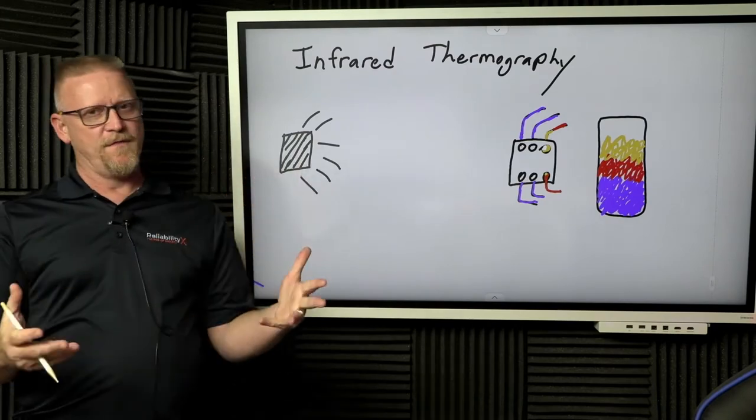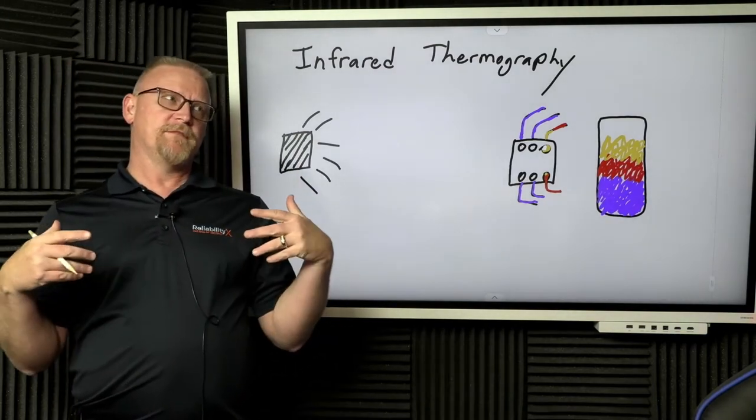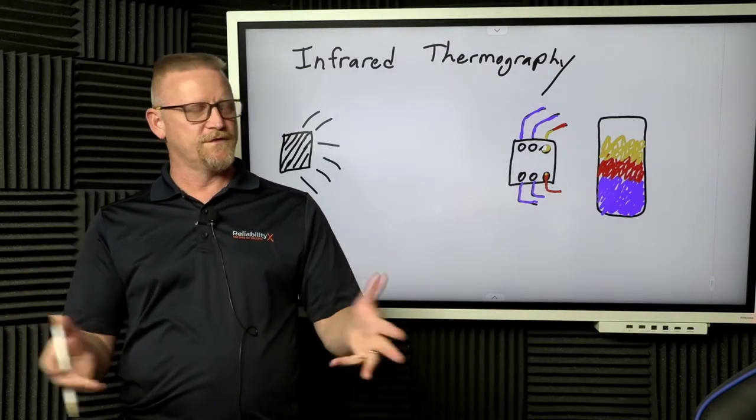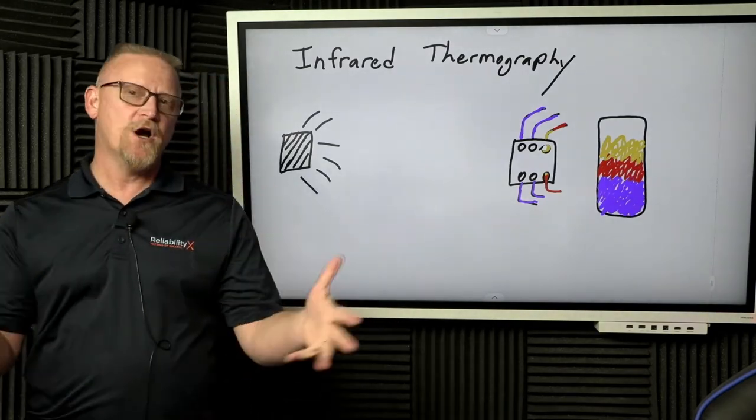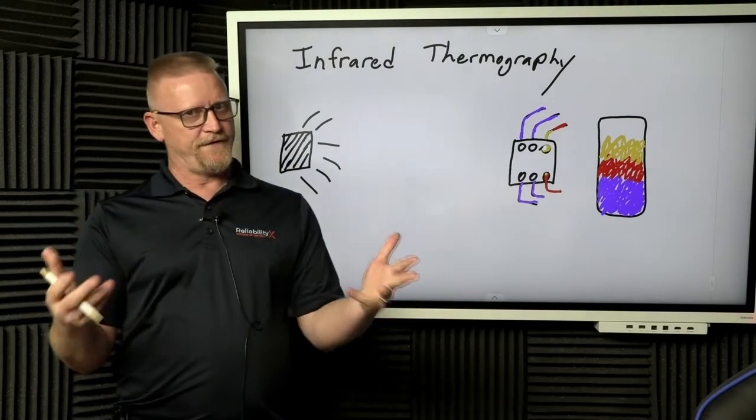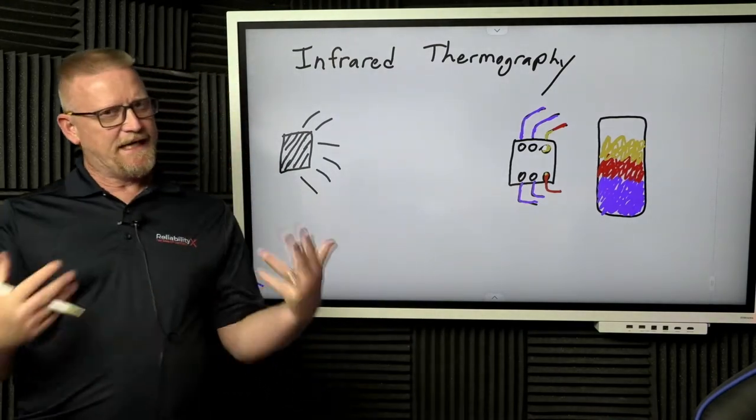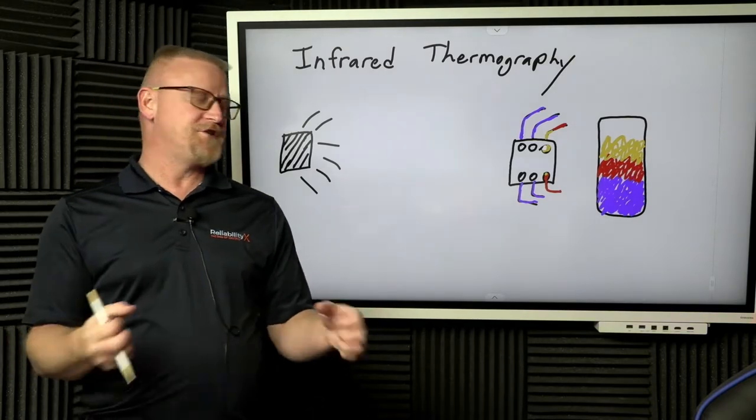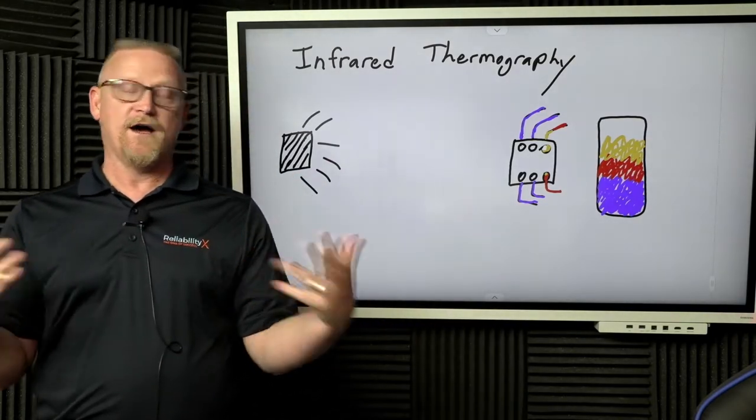In infrared thermography, we're essentially using a device that can detect energy and convert it to a visual signal showing us temperature variation. It does that because infrared radiation is emitted from all objects above zero Kelvin in temperature.